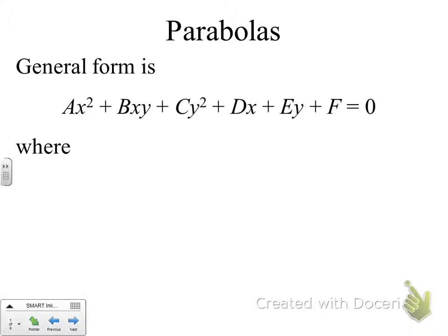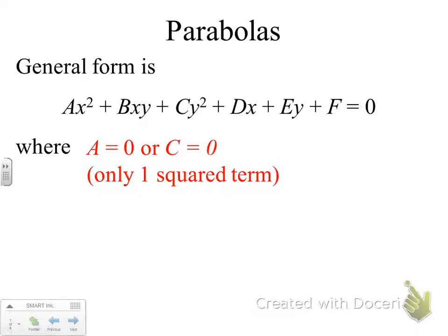So parabolas, remember our general form. The x squared and y squared terms are on the same side, set equal to zero. In general form, we'll recognize that our equation is a parabola when there is only one squared term. So either the coefficient A will equal zero, or the coefficient C will equal zero. And just as a reminder, that B coefficient is always equal to zero for us this year.